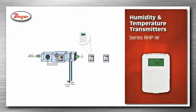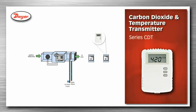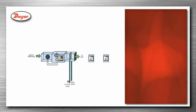Humidity and temperature transmitters, series RHP-W, are wall mounted in the zone and used to monitor the zone air conditions and determine demand. To determine the occupancy of the zone, the amount of air flow to the zone is then varied based on the occupancy.